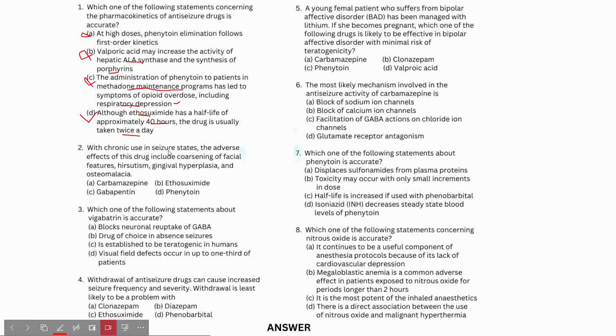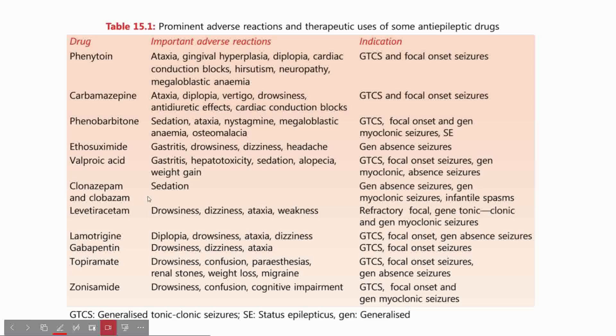Second question: With chronic use in seizure states, if we have seizures and chronic medication, what are the adverse effects? Phenytoin can cause gingival hyperplasia, hirsutism, and Stevens-Johnson syndrome. The main answer is phenytoin, so the answer is phenytoin.